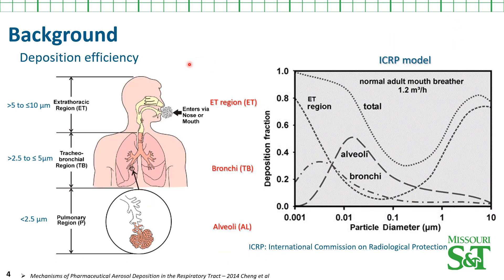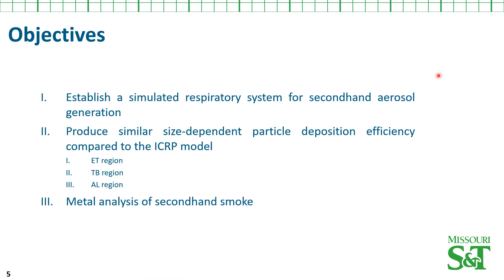I want to bring up that primary and secondary smoke are different due to the physical processes in the human respiratory system, as shown in this picture. As smoke particles enter the respiratory system, particles of specific size would have different deposition efficiency in different regions of the body. To understand this size-dependent deposition efficiency, the International Commission on Radiological Protection developed a human respiratory tract model — the ICRP model — that can describe the deposition efficiency in different regions of the respiratory system. Based on this ICRP model, our group tried to construct a simulated respiratory system to mimic size-dependent particle deposition in a real situation in order to generate representative secondhand smoke aerosols.